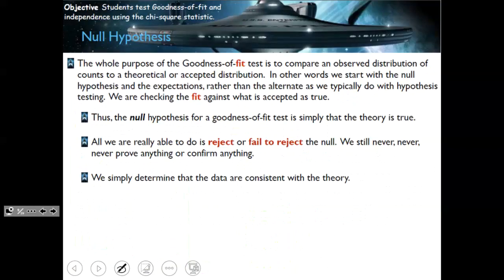The null hypothesis for goodness of fit is always stated in words, not symbols. The null hypothesis is that my distribution of data matches my theoretical distribution of data. The alternative is simply that the data isn't consistent with the distribution we had in mind. We can only reject or fail to reject — we're not proving or accepting anything.